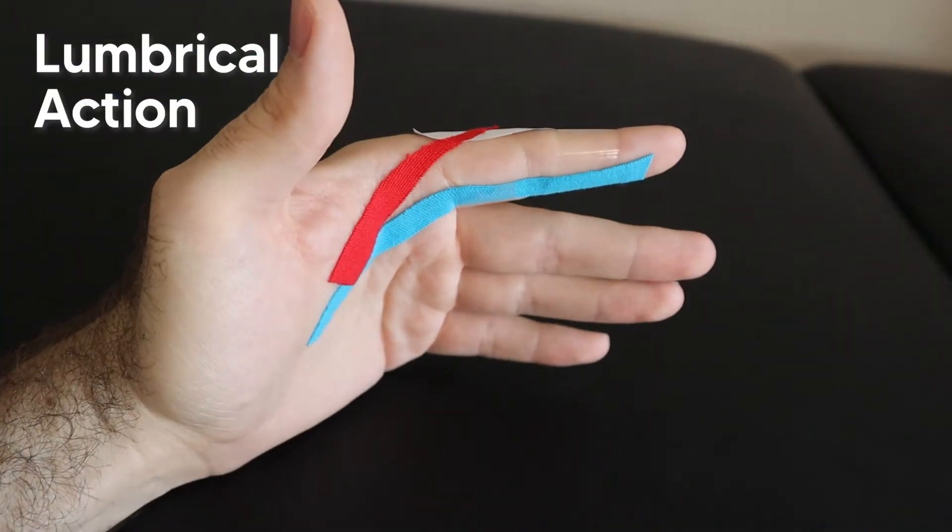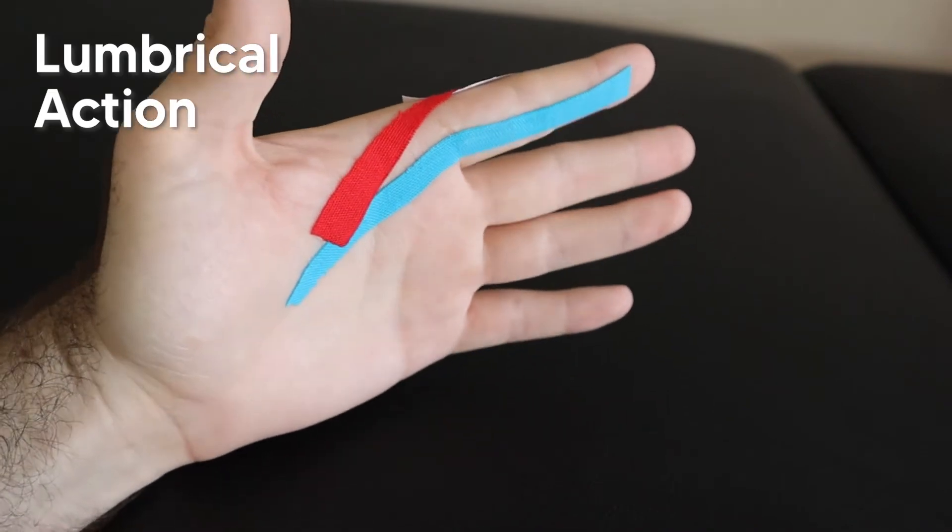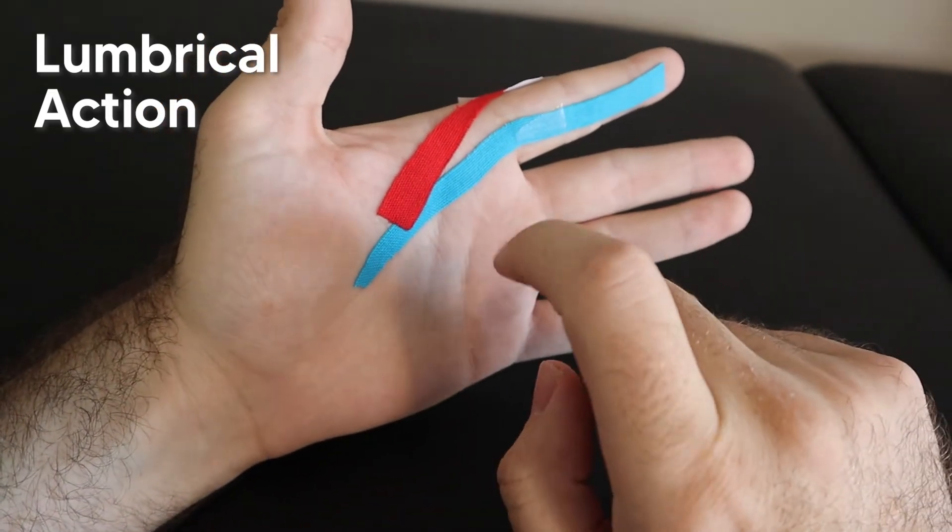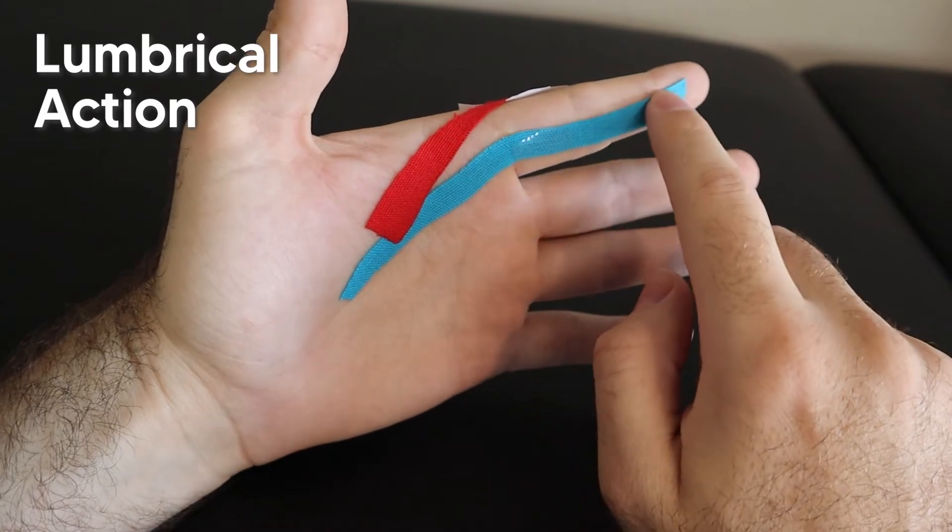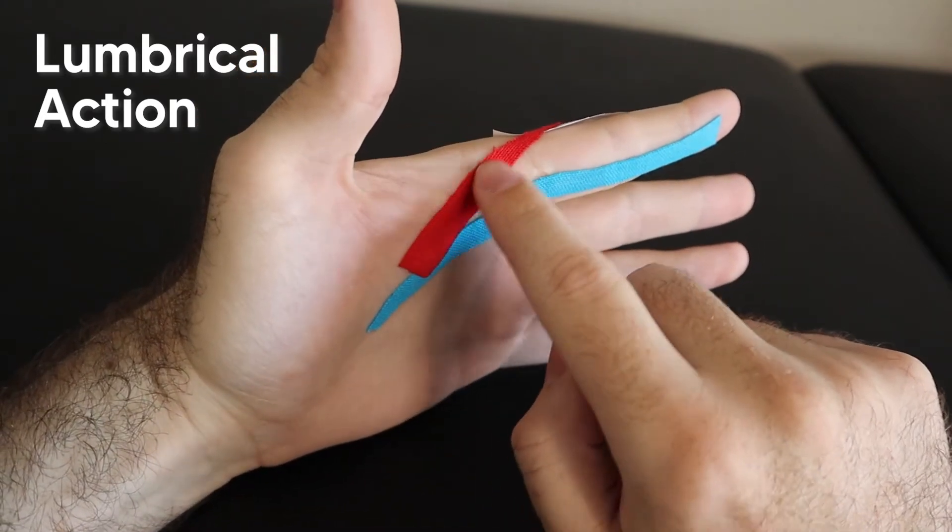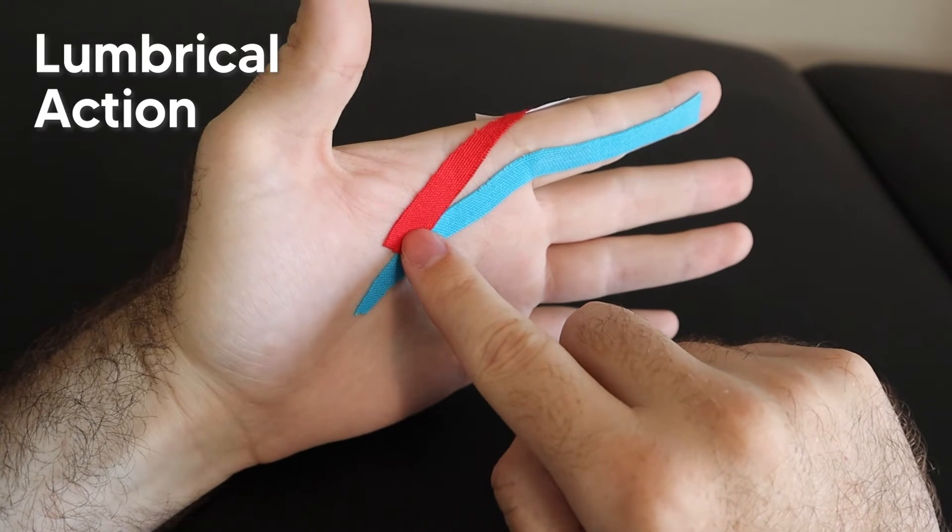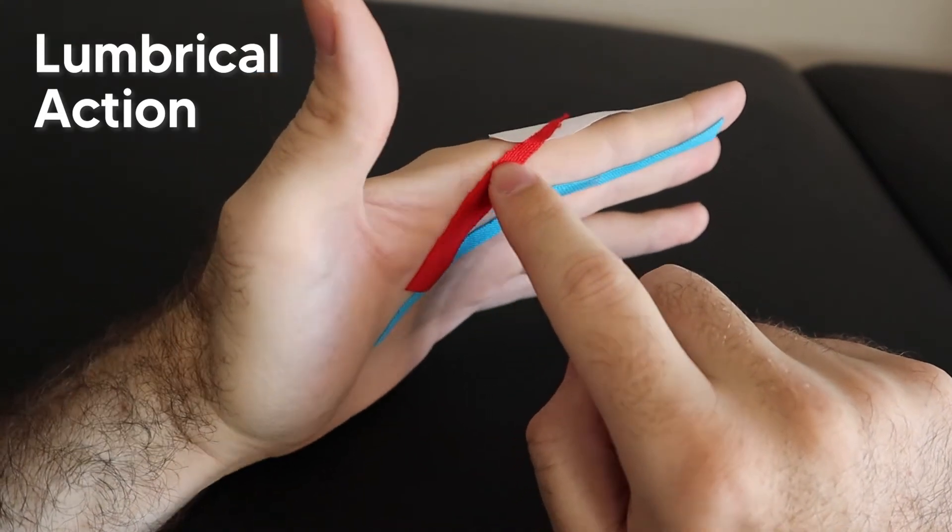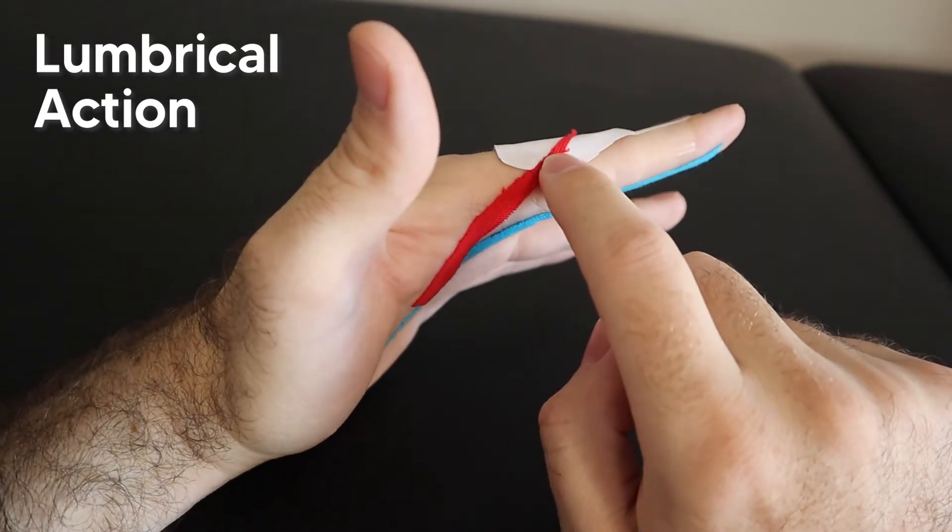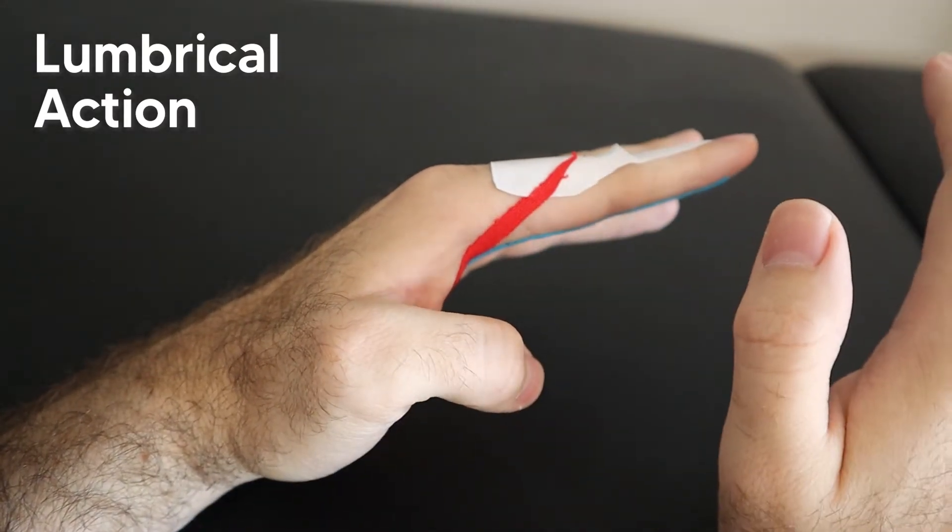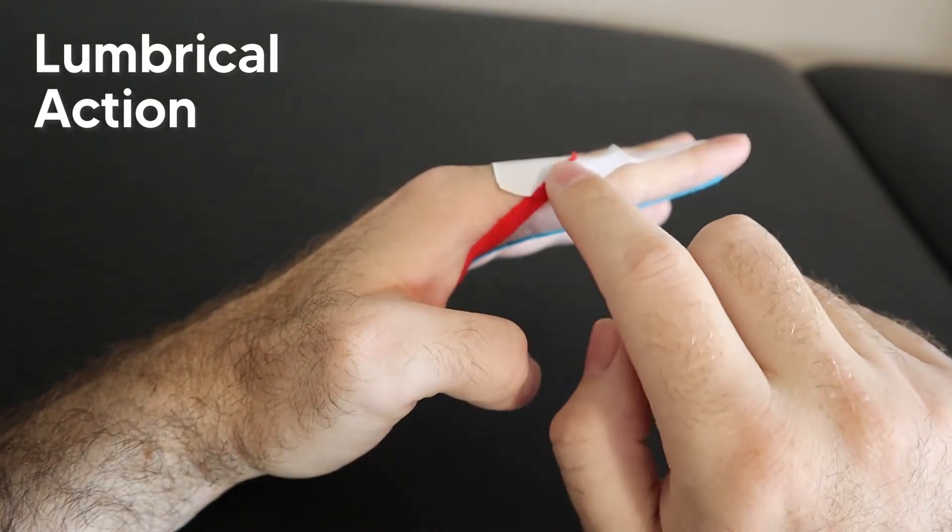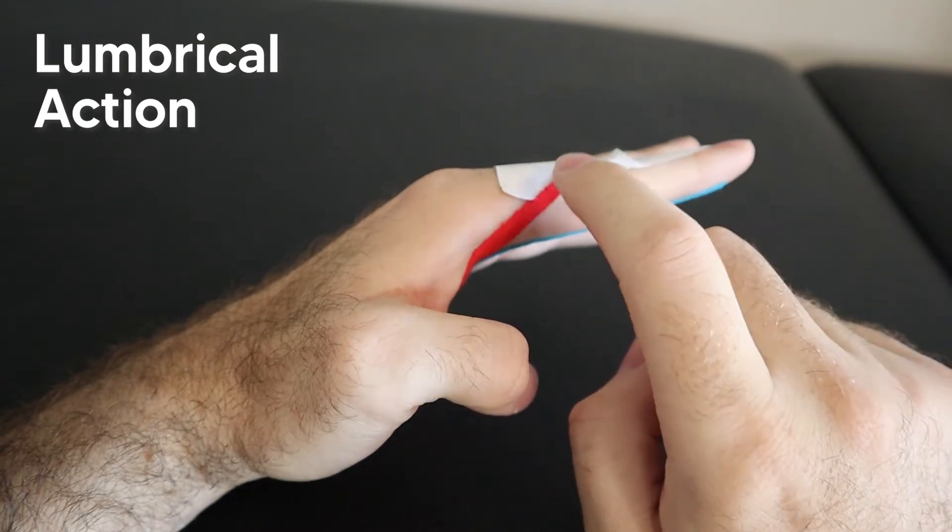So to give you a little better idea of how the lumbricals work, I have a very, very crude model here for you. So in blue here, this will represent the flexor digitorum profundus tendon. In red here, we have the lumbrical. It arises and originates off that tendon. It then runs laterally near the proximal phalanx and inserts on the extensor hood.